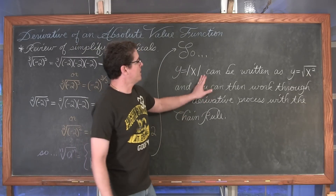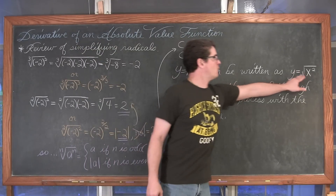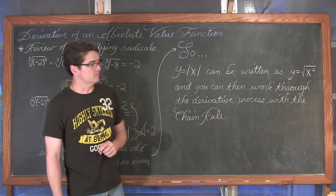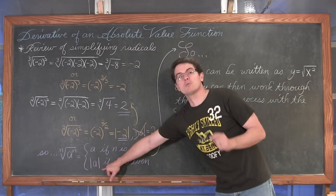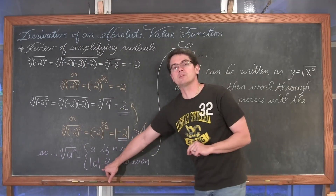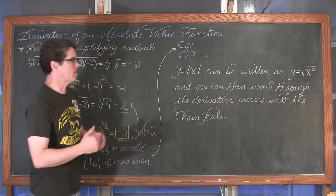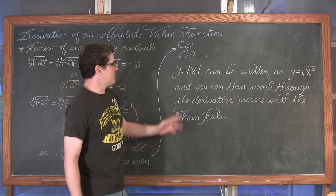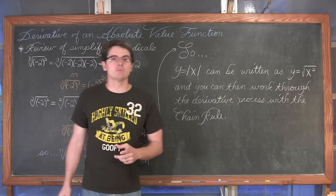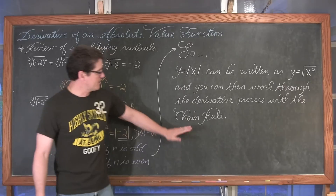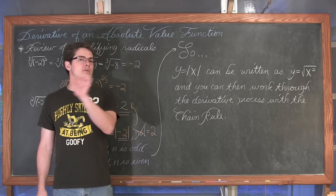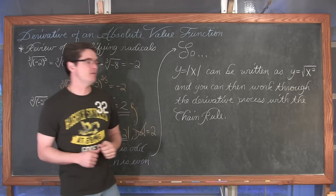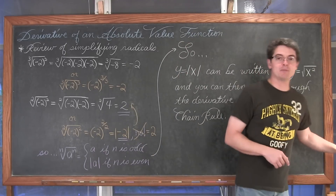So y equals the absolute value of x can be rewritten as y equals the square root of x squared. Just like our rule about simplifying radicals. You can then work through the derivative process with the chain rule. We can't find the derivative at those sharp bends, but there are many places in absolute value functions where you don't have a sharp bend.